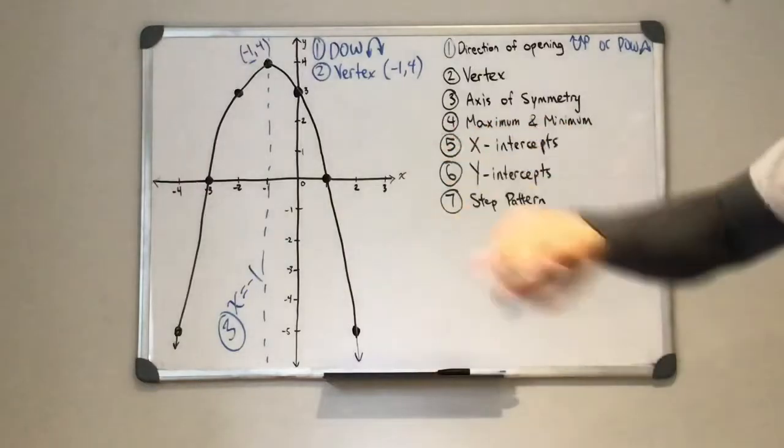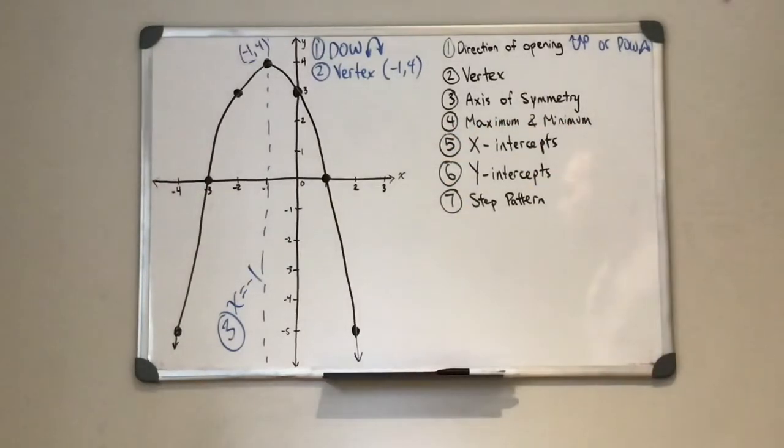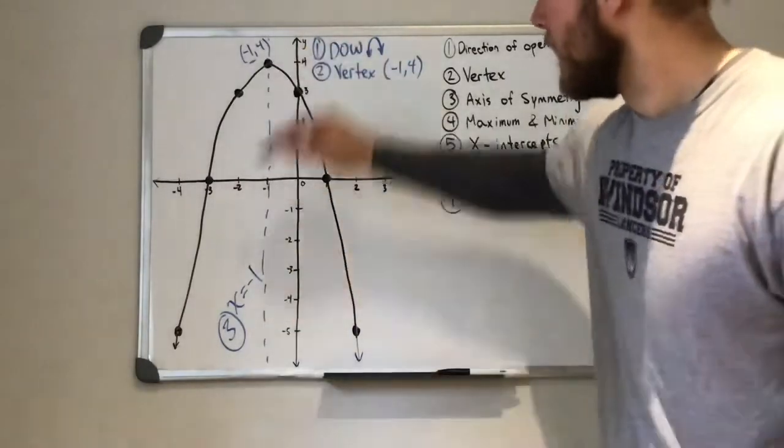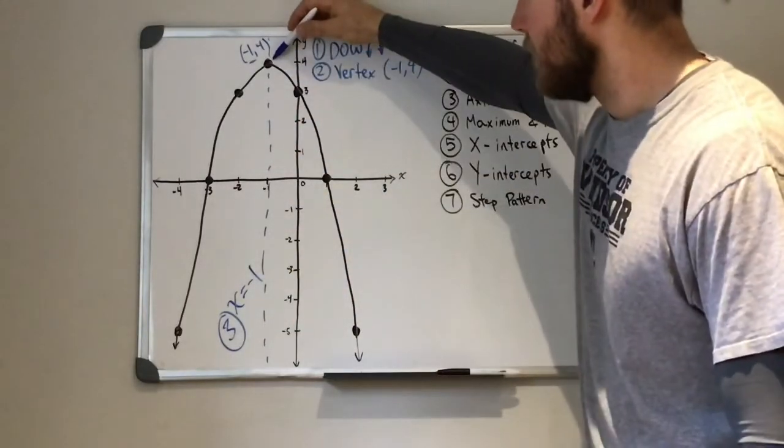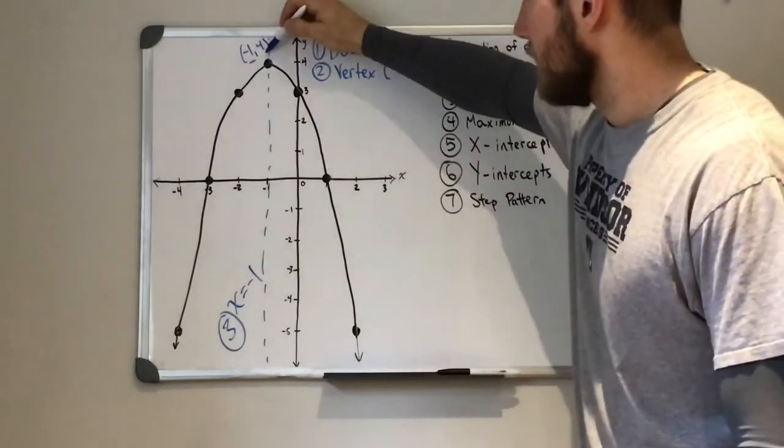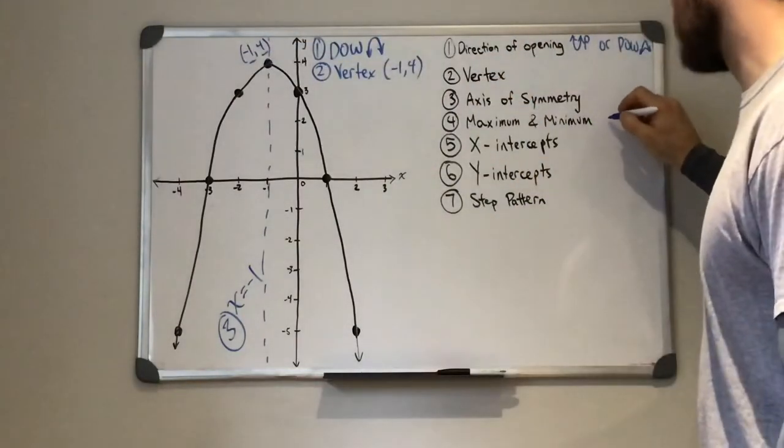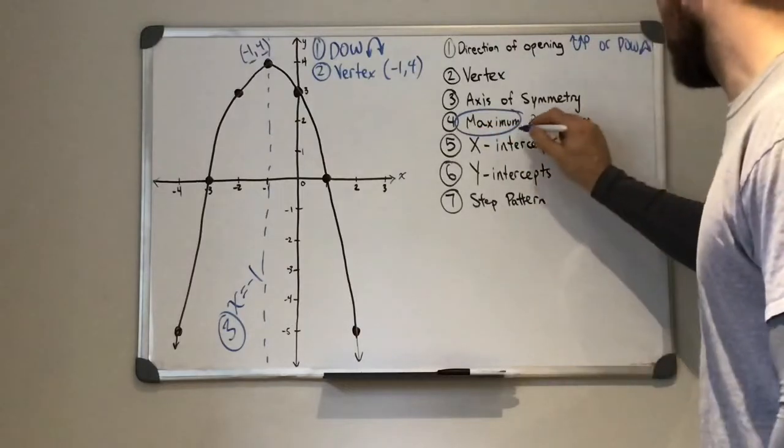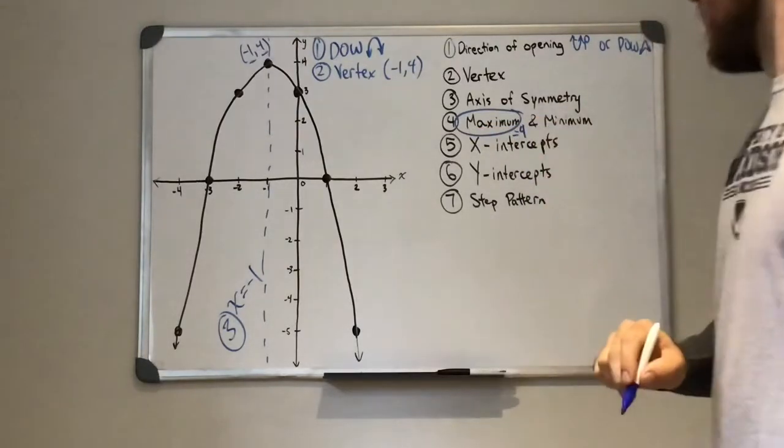Now does this parabola have a maximum value or a minimum value? So we can see because it opens down it's going to have a highest value. So that's going to be this value here. So our maximum. We have a maximum here, and that's equal to four.